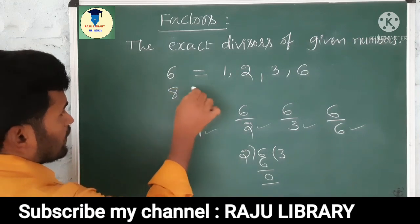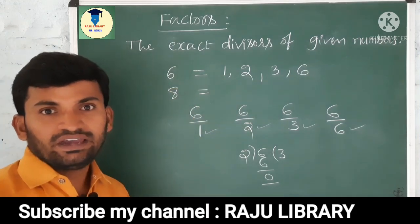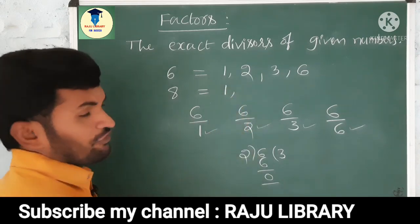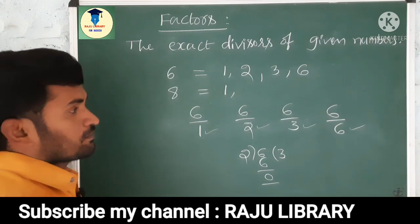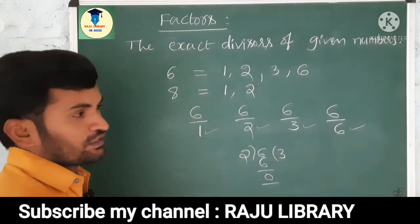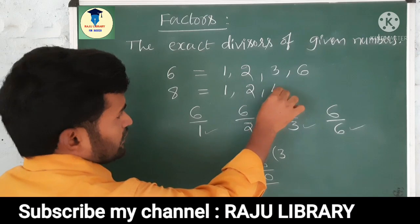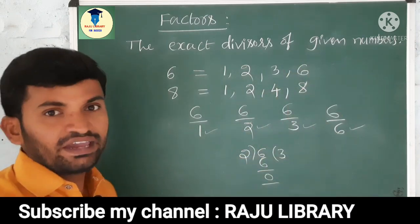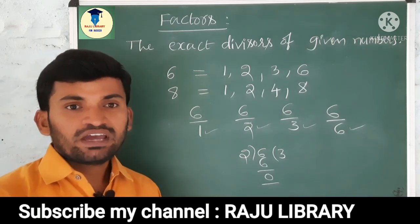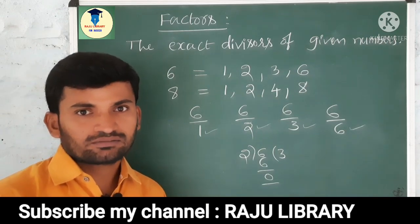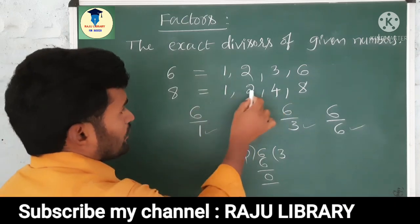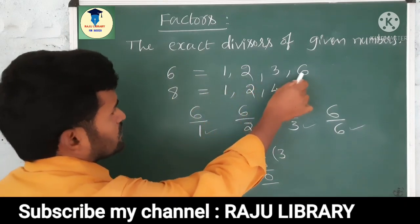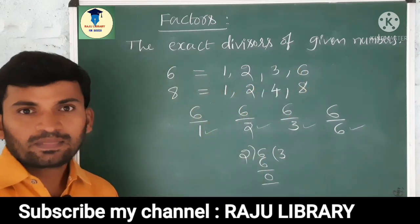Take one more example. Let us take 8. Here, the factors of 8: 1 is a factor — 1×8 is 8. 2 is a factor — 2×4 is 8. 4 is a factor — 4×2 is 8. 8 itself is a factor, because every number itself is a factor. So these are the factors of 8: 1, 2, 4, 8. And factors of 6 are 1, 2, 3, 6.